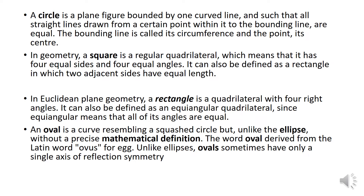In Euclidean plane geometry, a rectangle is a quadrilateral with four right angles. It can also be defined as an equiangular quadrilateral, since equiangular means that all of its angles are equal.